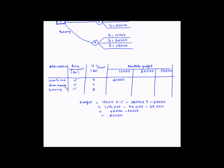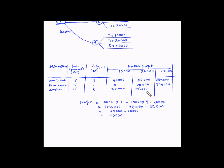Similarly, calculating for all alternatives and demand levels, the monthly profit values are: for overtime — ₹40,000, ₹100,000, ₹280,000; for new equipment — ₹0, ₹80,000, ₹320,000; and for leasing — ₹35,000, ₹105,000, and ₹315,000.